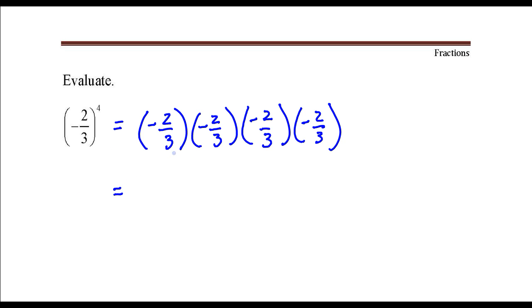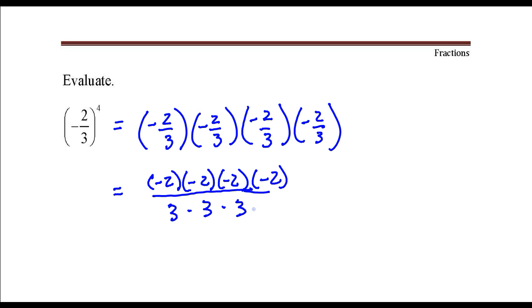So I'm going to multiply these fractions together. In the numerator, we have negative two times negative two times negative two times negative two. In the denominator, we have three times three times three times three.